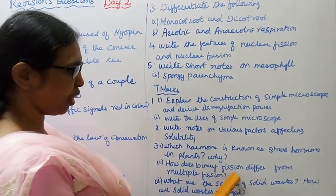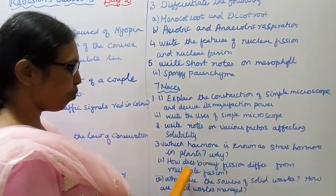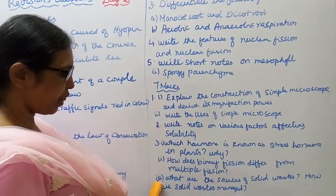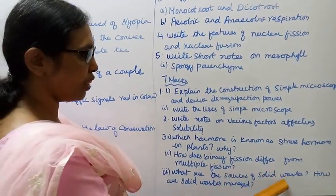Fourth: How does binary fission differ from multiple fission? Fifth: What are the sources of solid waste?